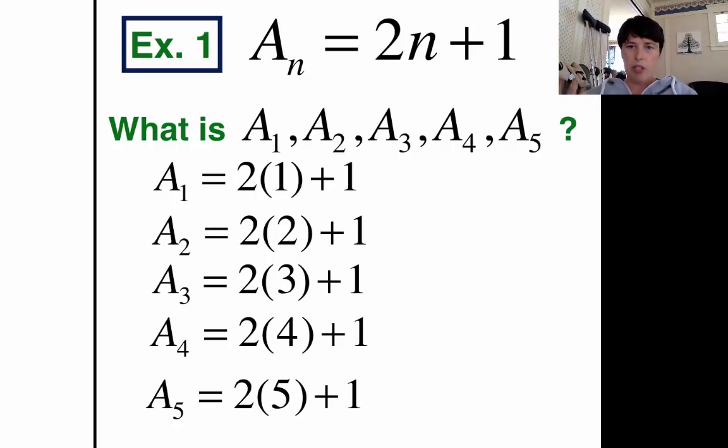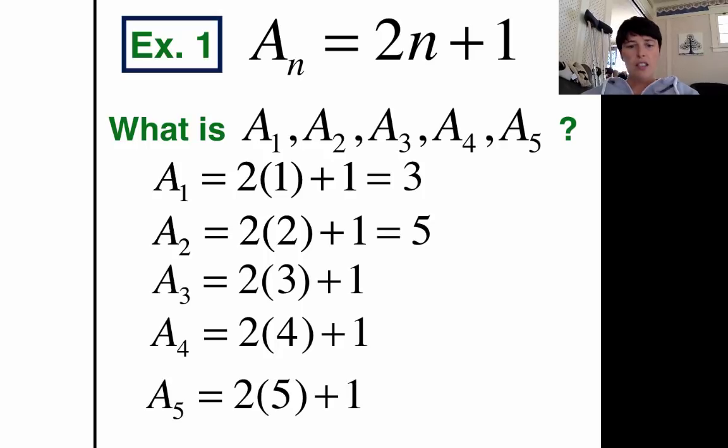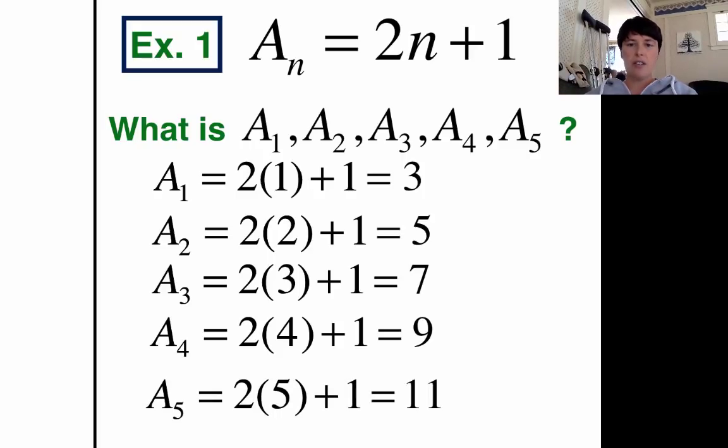So the first one there, 2 times 1 is just 2, plus 1 is 3. 2 times 2 is 4, plus 1 is 5. 2 times 3 is 6, plus 1 is 7. 2 times 4 is 8, plus 1 is 9. 2 times 5 is 10, plus 1 is 11. So there it is. There's our sequence: 3, 5, 7, 9, 11. We got our numbers.